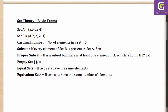An empty set is represented by the empty braces symbol or the phi icon, meaning there are no elements in that set. An empty set is a subset of all sets. Equal sets have the same elements. Equivalent sets have the same number of elements — so if set A has 5 elements and set B also has 5 elements, they are equivalent but not necessarily equal.